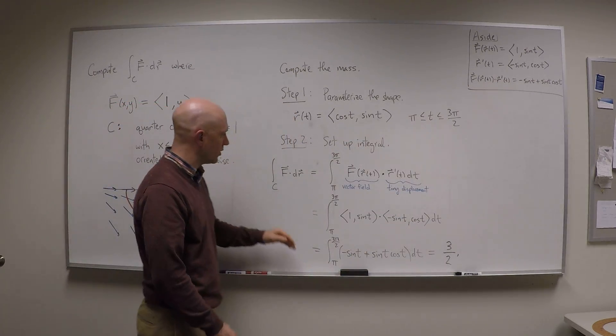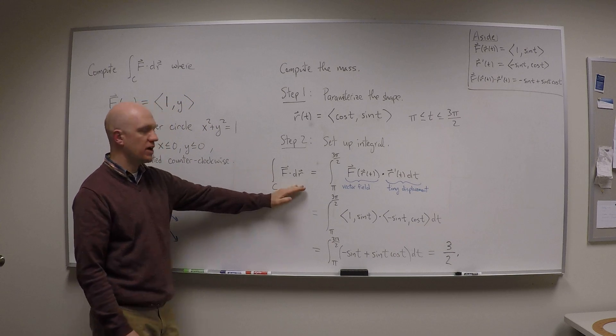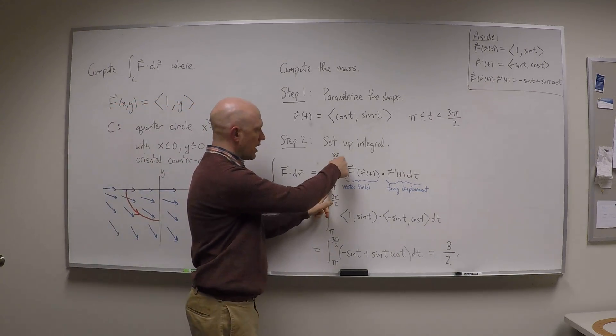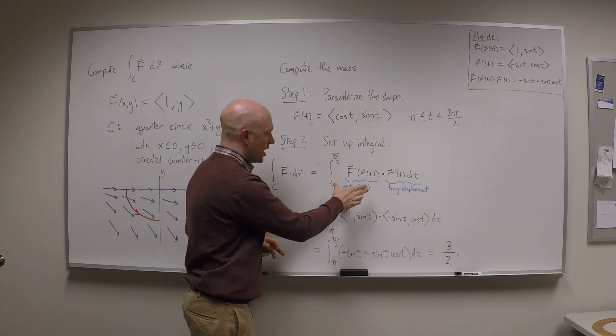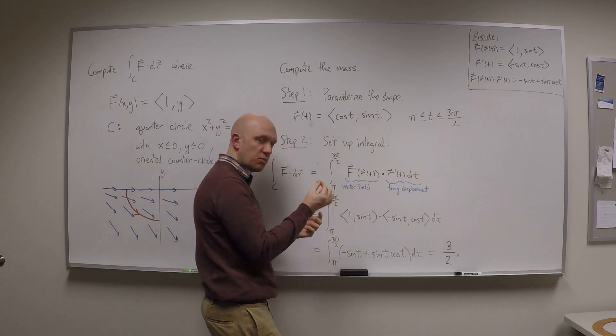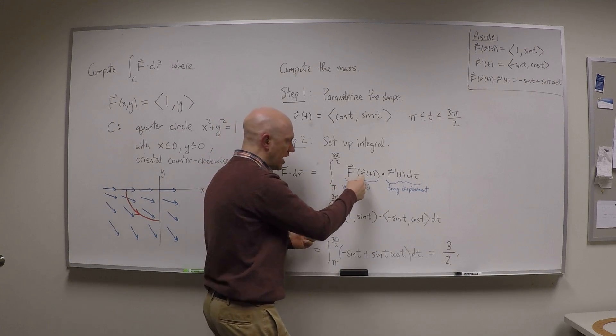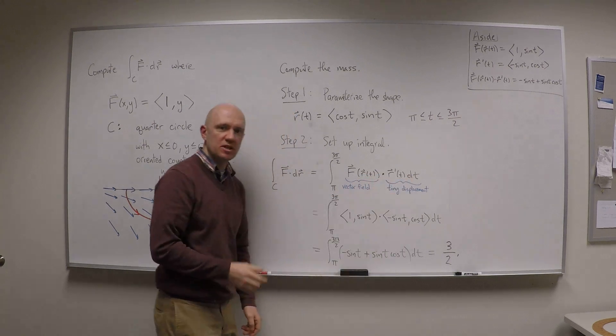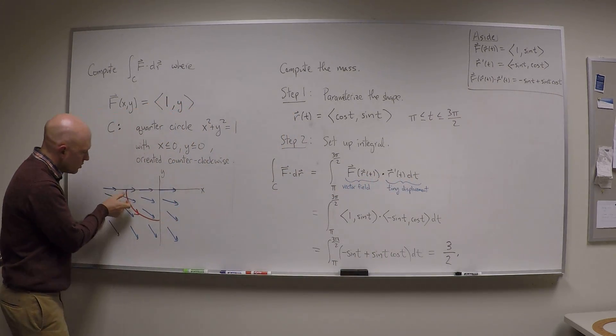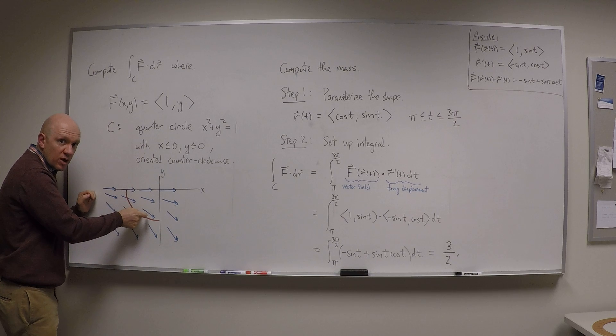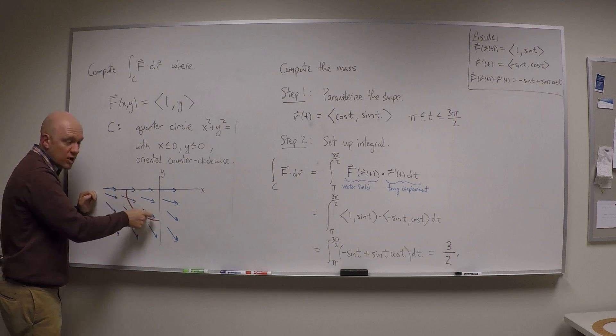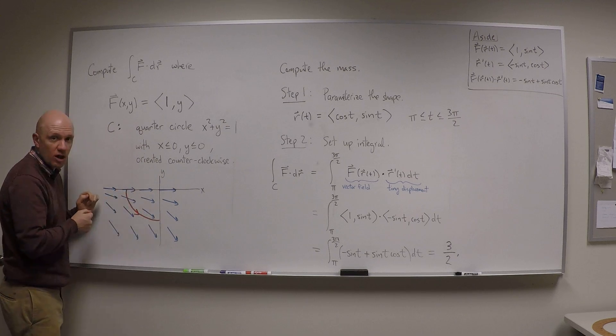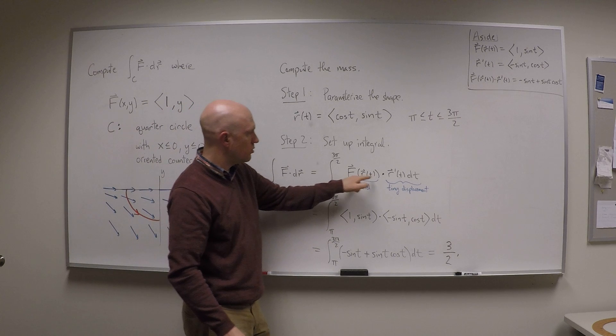Now we can set up the whole integral. The integral over the curve of f dot dr is the lower bound to the upper bound in terms of the parameter, and then I'm going to take the vector field at each point in the curve, that's f evaluated at r of t, and I'm going to dot that into a little tiny displacement. That's a little tiny tangent vector, which computes that dot product all the way along the curve and adds them all up.